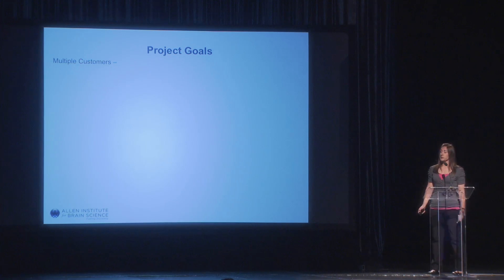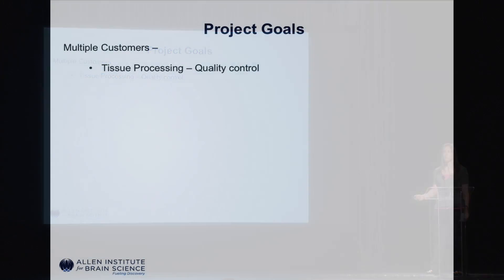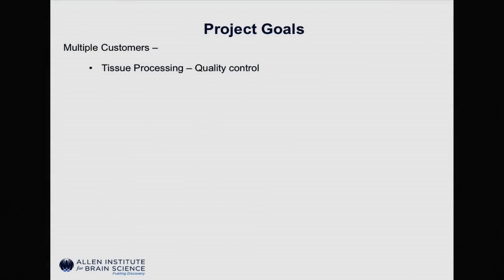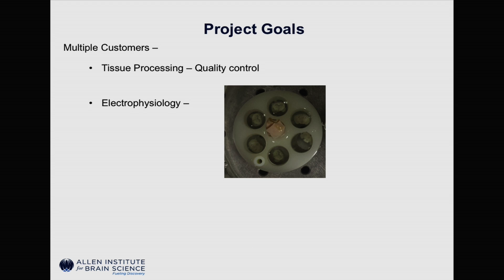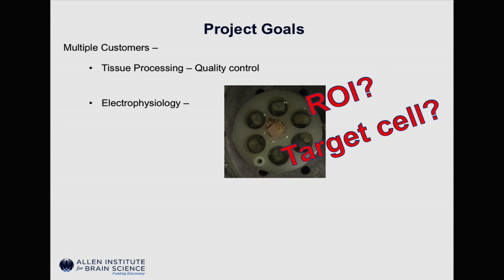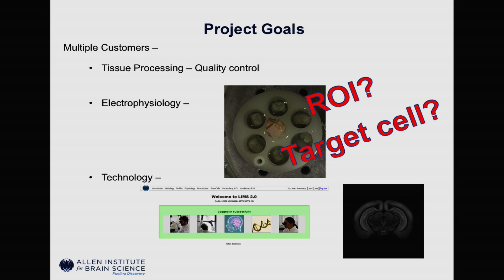This project had multiple customers. The tissue processing team wanted to use the images for quality control for our tissues — we wanted to make sure that there was consistency and high quality amongst every tissue, every slice that we provided. The electrophysiology team needed a full-face image so that they could figure out where their region of interest was and what target cells they were going to aim their electrodes for recording. And the technology team needed something compatible with our laboratory information management system, our LIMS system, and of high enough quality to register to the common coordinate framework.